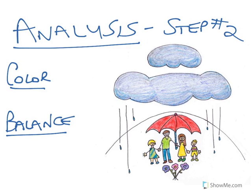Now we're going to move on to Step 2 of the four-step method of critique — it's called Analysis. This is where we analyze the drawing, painting, or sculpture and decide what communicates to us most in the work. I've decided that the element of art that communicates the most is color, and the principle that communicates the most is balance. Remember: elements are things that make up other things; principles are rules that guide how the elements get used.